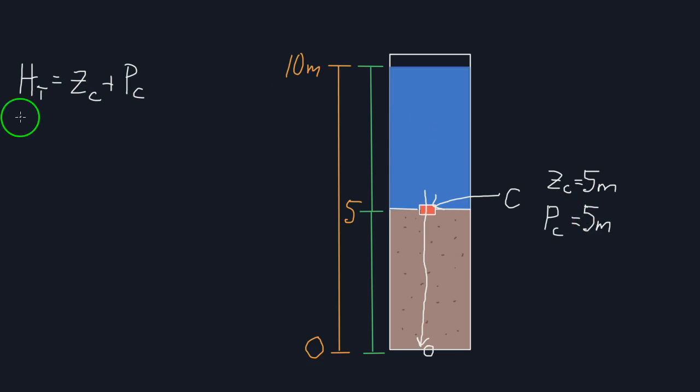So back to our equation, our total head equals 5 plus 5, which equals 10 meters. Pretty simple, right? It's nothing too drastic, nothing too crazy.